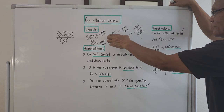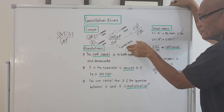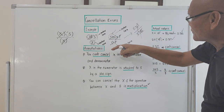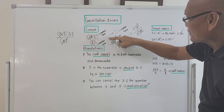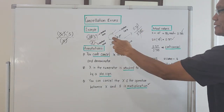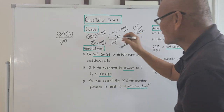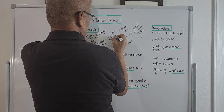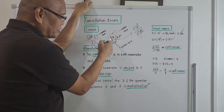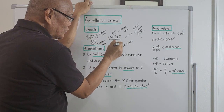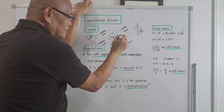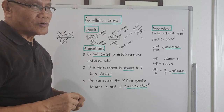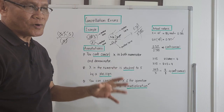Sine x is one term and x is just another term. For them to be cancelled, you would need to eliminate sine x, but there is a sine function there. So as long as there is a sine function here, you cannot cancel x with x. These are the so-called cancellation errors in the simplification of problems under algebra.